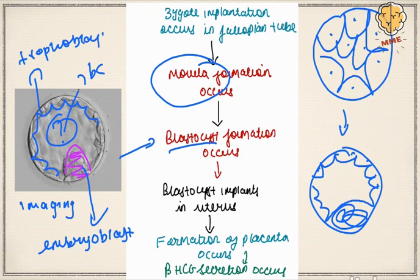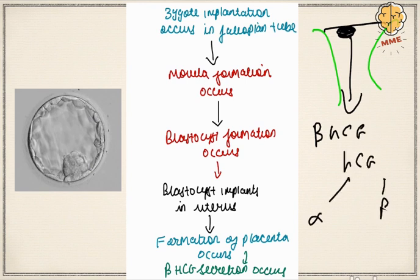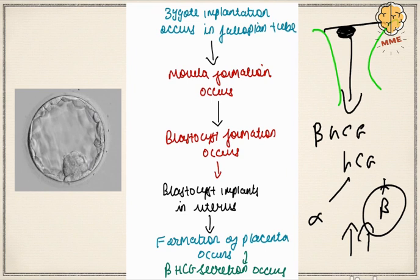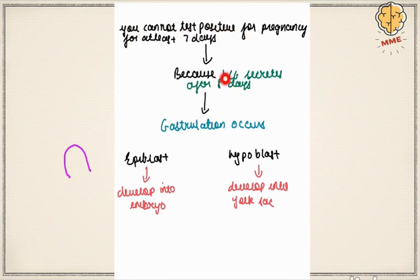Around 6 to 10 days after formation, the blastocyst implants into the uterus. As soon as it implants, it starts secreting beta-HCG — the beta component rises in pregnancy. Only after 6 to 10 days does the level of beta-HCG increase in the blood. Therefore, you cannot test positive for pregnancy for at least 7 days, since HCG secretion begins around day 8.